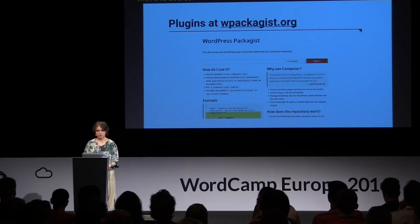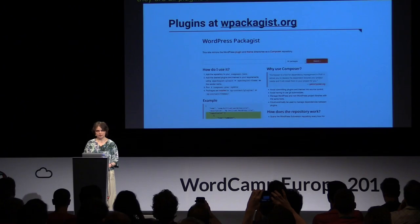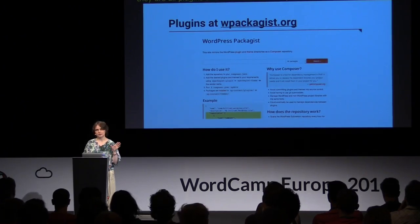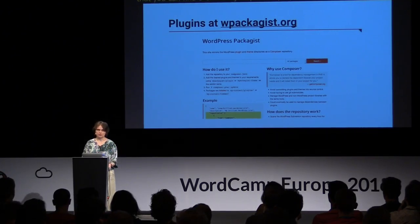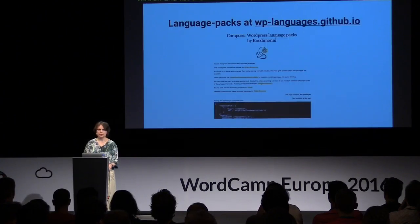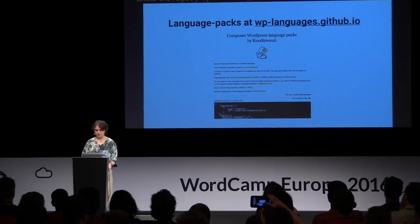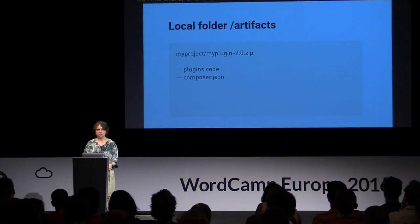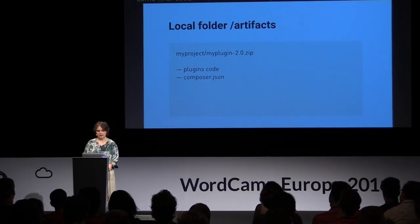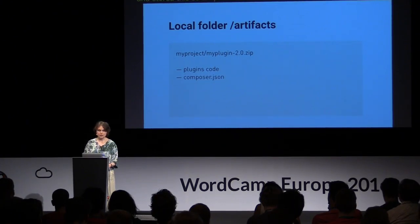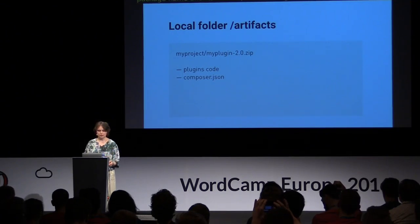For plugins and themes, we have wpackagist.org registry — all plugins and themes released in the official WordPress.org repository are mirrored there, so you can find them and just copy the proper package name and version and list them in composer.json. For language packs, there is also a community registry, and nearly every language pack can be found there with the same workflow. And finally, for some private code that is not released publicly, we can use a local folder. In this case, each dependency — for example, a plugin — has to be zipped and stored there as a zip artifact file. The filename should contain the package name and its version, and inside goes the plugin code itself with a proper composer.json containing the name, version, and other settings.